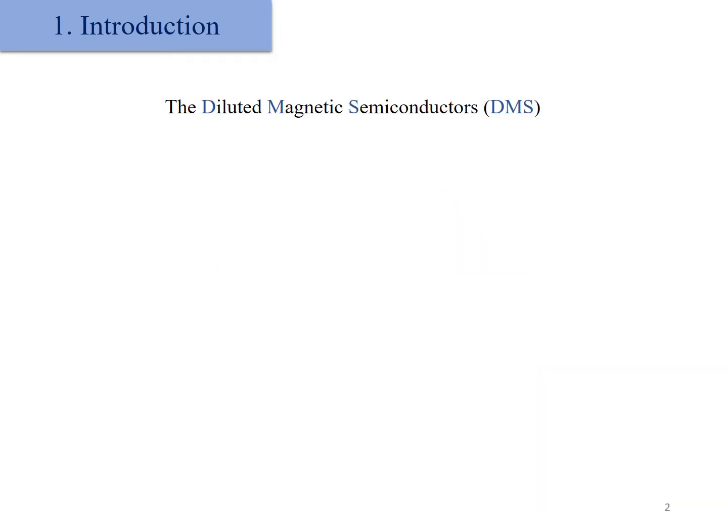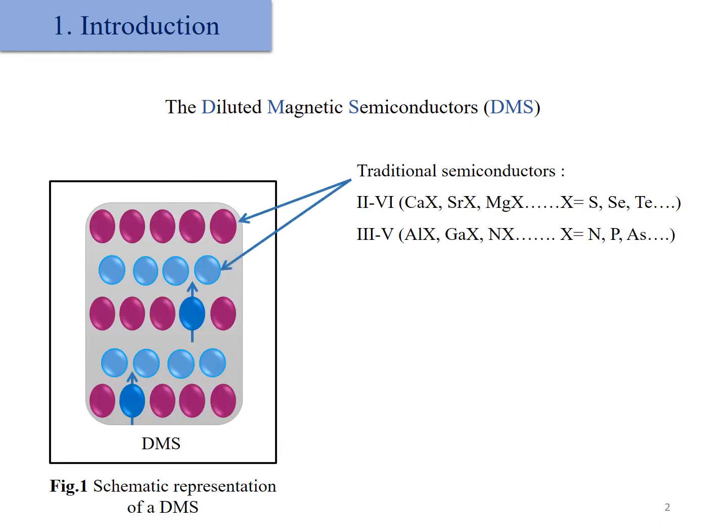Among the attractive materials used in spintronic devices, we find the diluted magnetic semiconductors, which can be defined as the traditional semiconductors from 2-6 or 3-5 elements doped with magnetic ions such as transition metals.